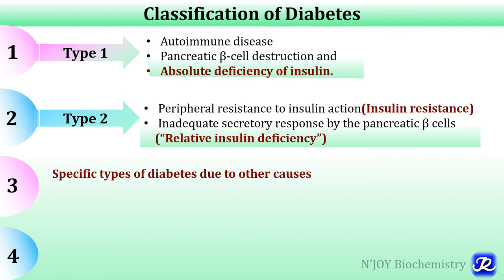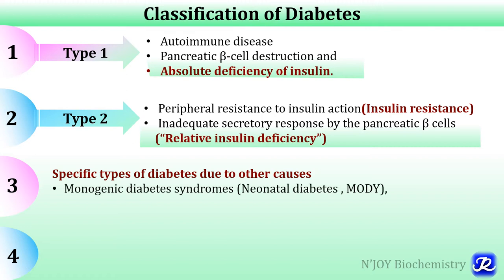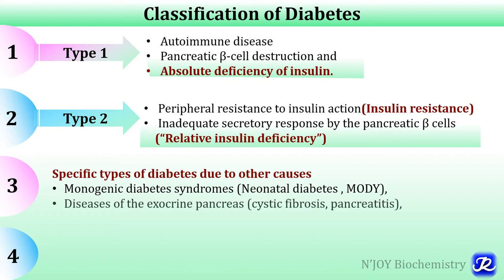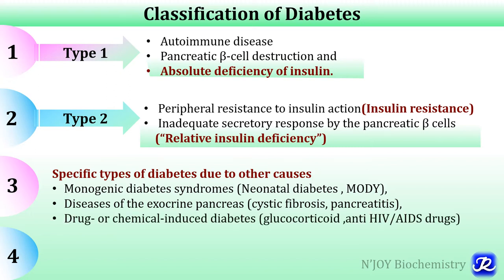Then there are specific types of diabetes due to other causes like monogenic diabetes syndrome, neonatal diabetes, and monogenic diabetes of young; diseases of exocrine pancreas like cystic fibrosis and pancreatitis; and drug or chemical induced diabetes like glucocorticoids and anti-HIV drugs. The fourth type is gestational diabetes mellitus.